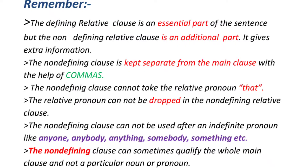The defining relative clause is an essential part of the sentence, but the non-defining relative clause is an additional part — it gives extra information. The non-defining clause is kept separate from the main clause with the help of commas. The non-defining clause cannot take the relative pronoun 'that,' and the relative pronoun cannot be dropped in the non-defining relative clause. Also, the non-defining clause cannot be used after an indefinite pronoun like anyone, anybody, anything, someone, somebody, or something.